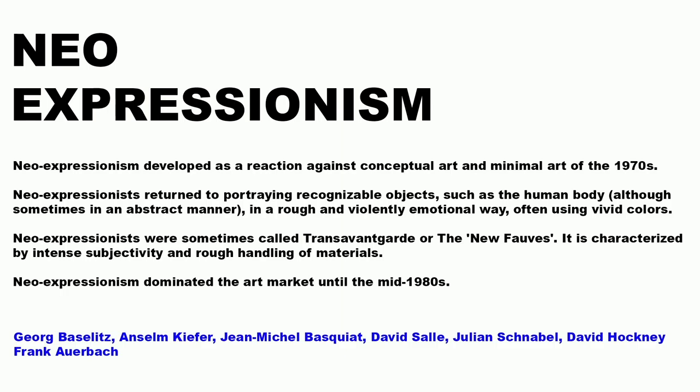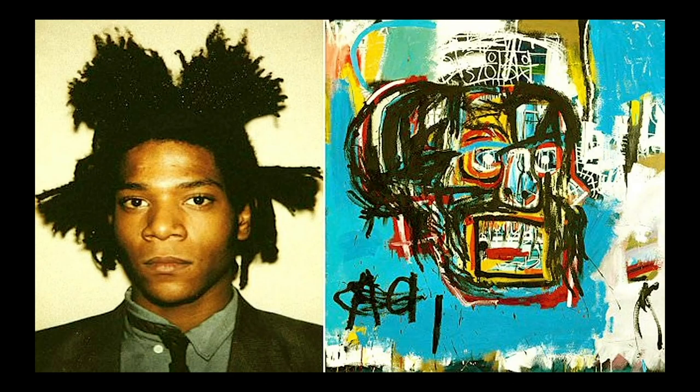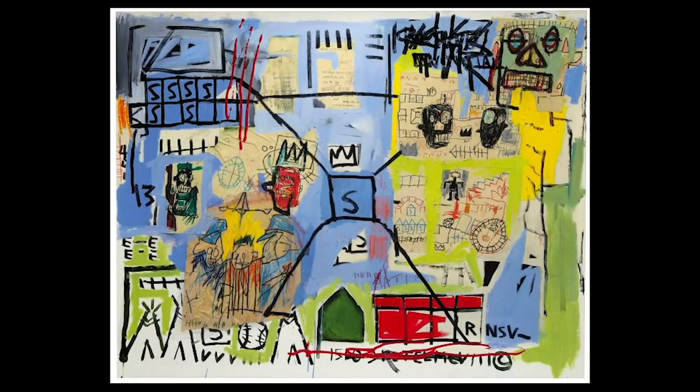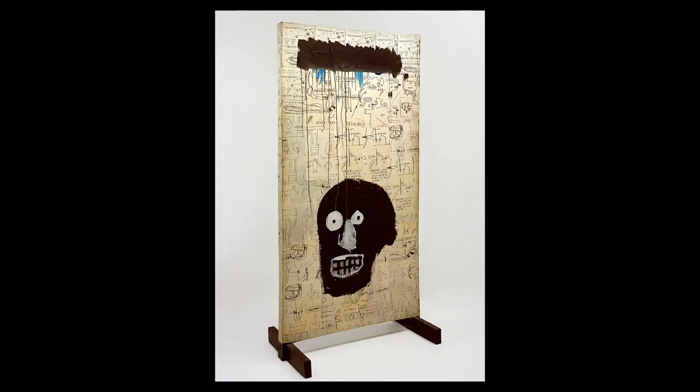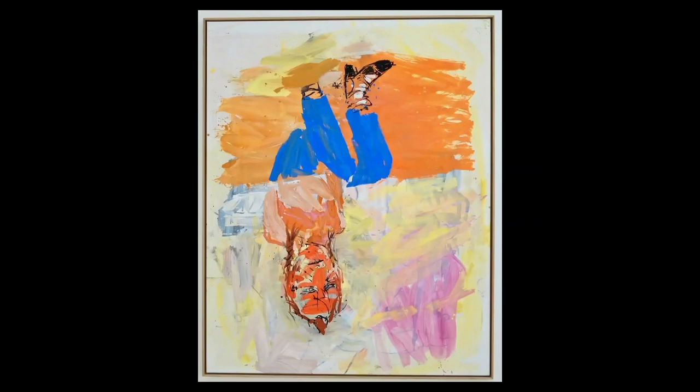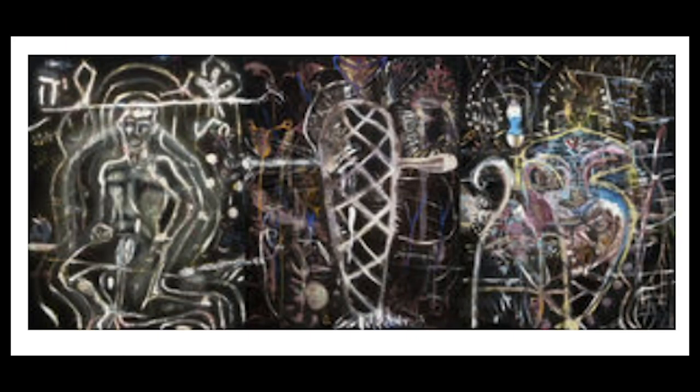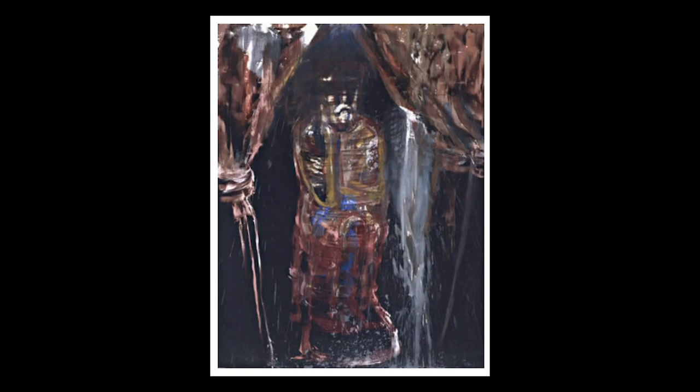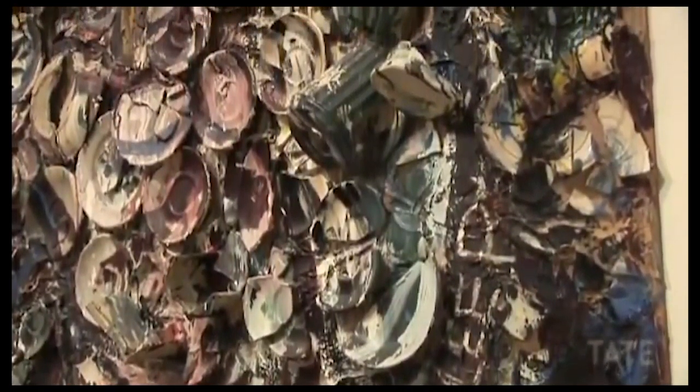Neo-Expressionism developed as a reaction against conceptual art and minimal art of the 1970s. Neo-Expressionists returned to portraying recognizable objects such as the human body, sometimes in an abstract manner, in a rough and violently emotional way, often using vivid colors. They were sometimes called trans-avant-garde or the new Fauves. It is characterized by intense subjectivity and rough handling of material. Neo-Expressionism dominated the art market until the mid-1980s. You can see Jean-Michel Basquiat's artworks here — very tough, very rough, very violent, and very expressive. A lot of colors and dynamic expression — that's why some people call them the new Fauves.